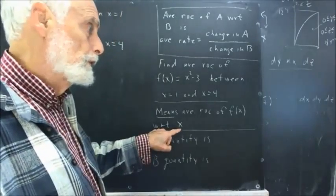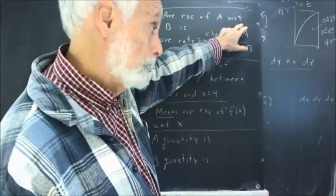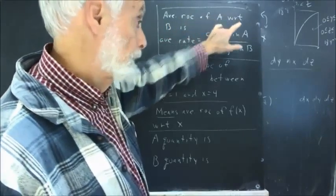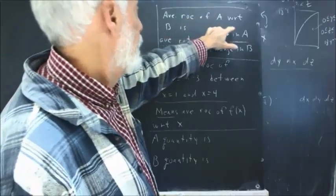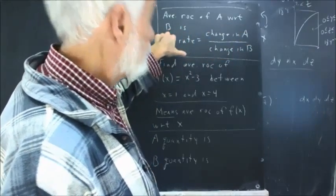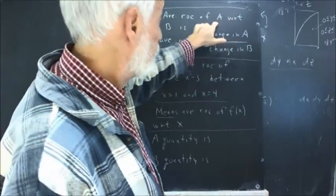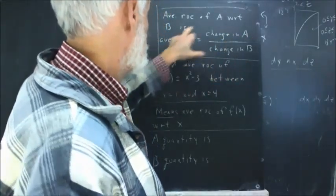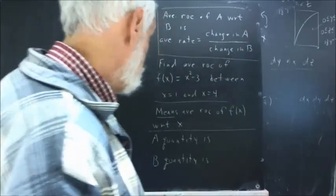The phrase 'with respect to' is extremely important. WRT stands for 'with respect to' and ROC stands for 'rate of change' — terminology you should be familiar with from earlier in the course. The A quantity is the one that comes before 'with respect to,' and the B quantity is the one that comes after. Whatever comes before goes in the numerator; whatever comes after goes in the denominator.